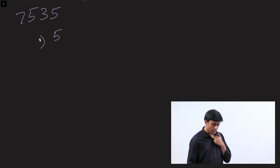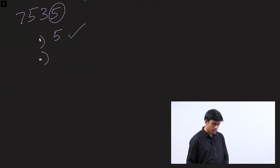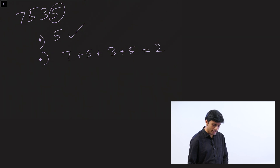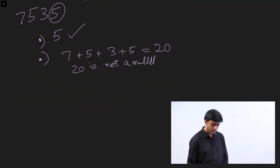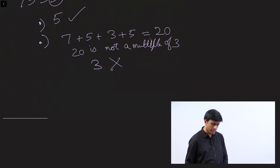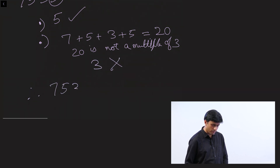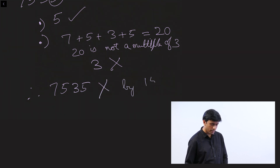Is this number divisible by 5? Since the last digit is 5, it is divisible by 5. How about 3? Is this number divisible by 3? Let's check: 7 plus 5 plus 3 plus 5 adds up to 20. Since 20 is not a multiple of 3, it is not divisible by 3. Therefore, 7,535 is not divisible by 15. Remember, it needs to be divisible by both 5 and 3.